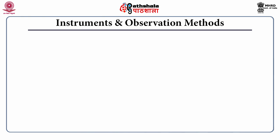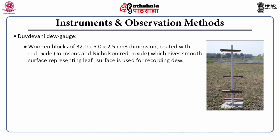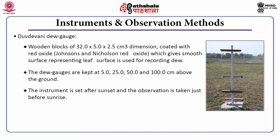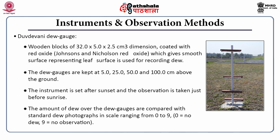The next equipment is the dew gauge. It uses wooden blocks of 32 by 5 by 2.5 centimeter dimensions, coated with Johnson's and Nicholson's red oxide to give a smooth surface representing the leaf surface. Dew gauges are kept at different heights: 5 cm, 25 cm, 50 cm, and 100 cm above the ground. The instrument is set after sunset and observation is taken just before sunrise, because delay would cause evaporation of the dew and give inaccurate measurements. The amount of dew is compared to standard dew photographs on a scale of 0 to 9, where 0 means no dew and 9 means no observation.